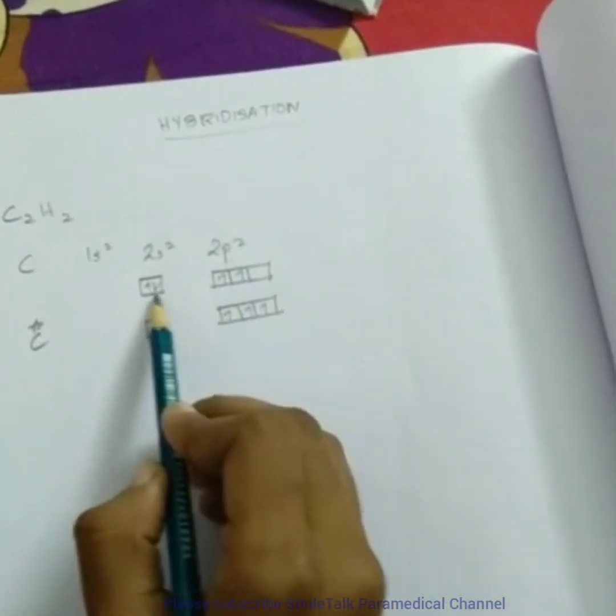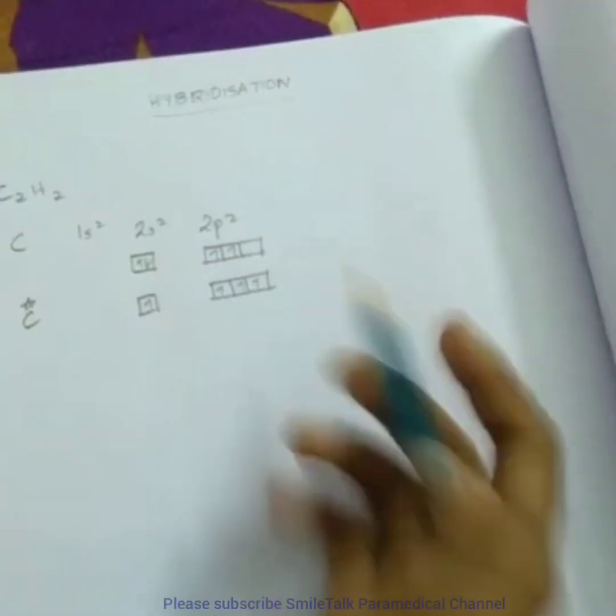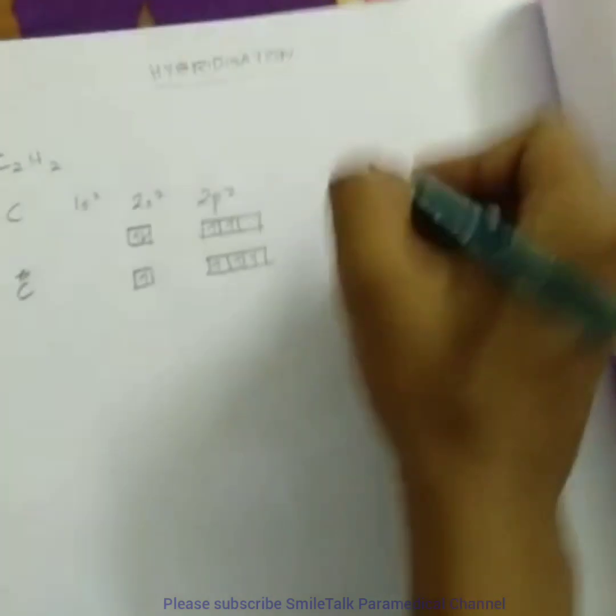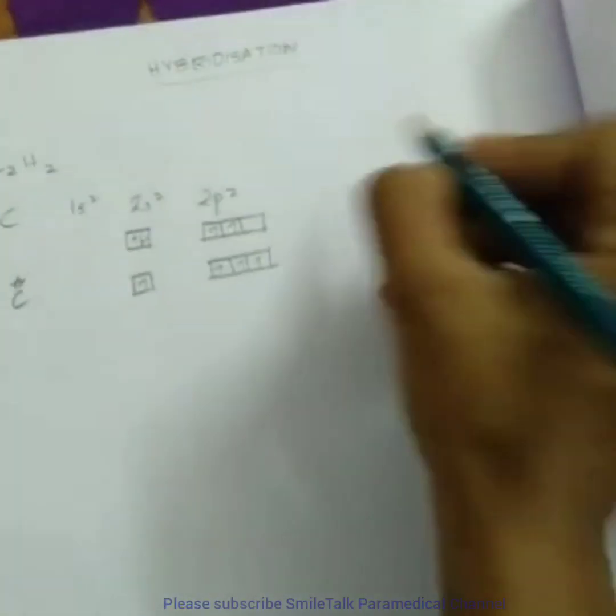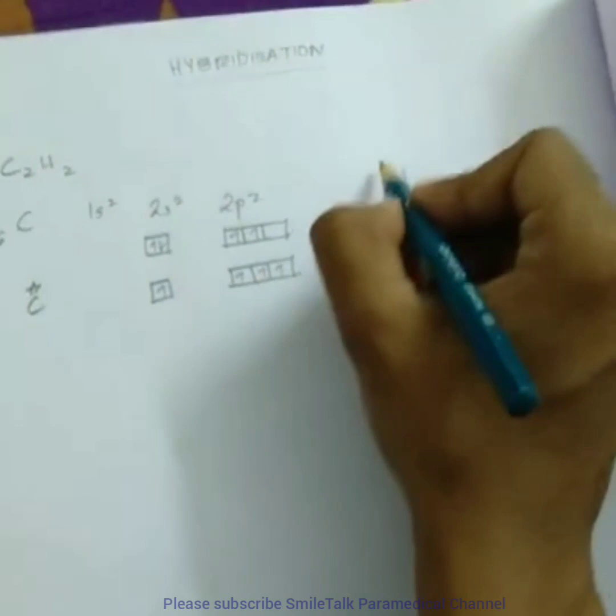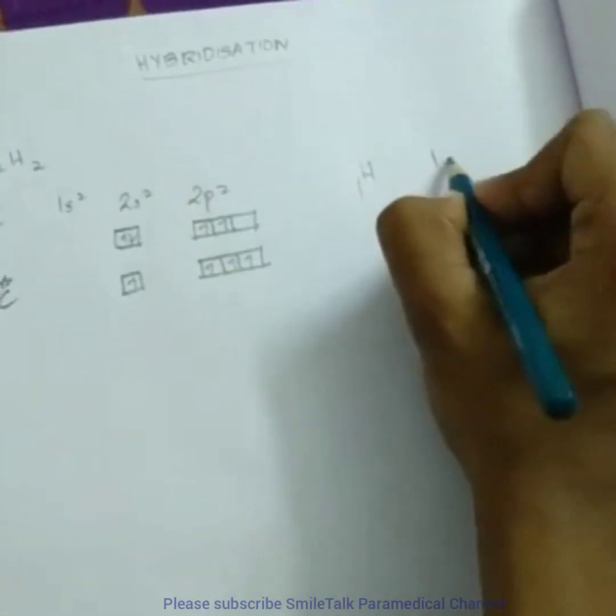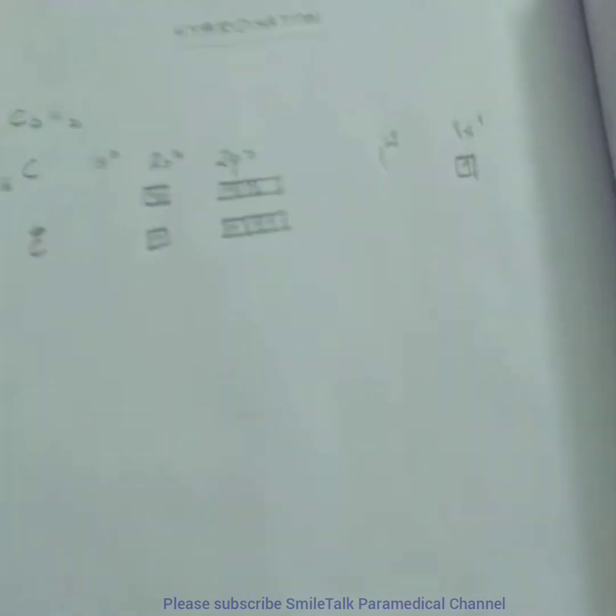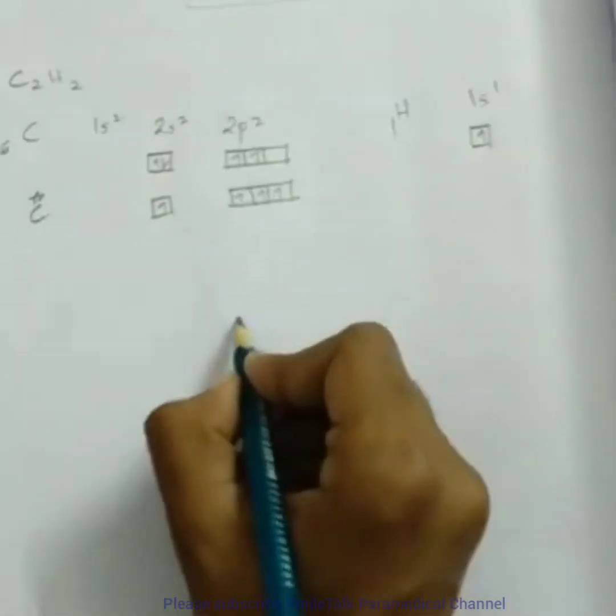Because we are requiring four bonds, that means four hybrid orbitals for hybridization. In hydrogen there is one electron, it is 1s1, one electron. So let's draw the structure of C2H2 in a rough manner.